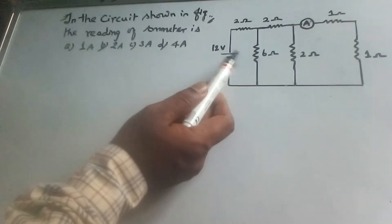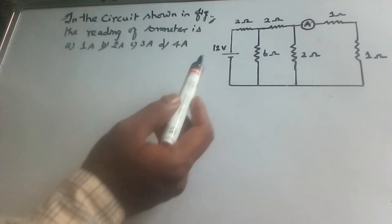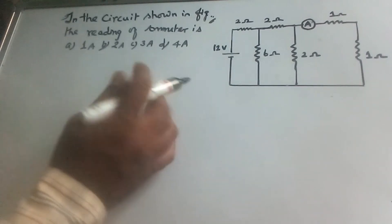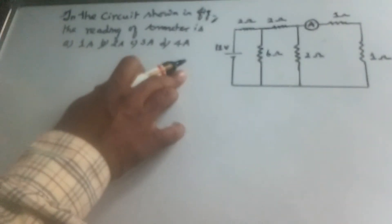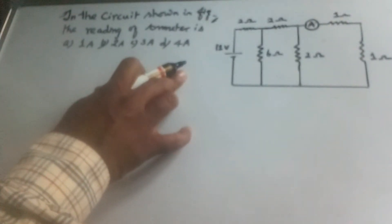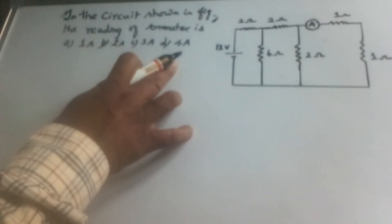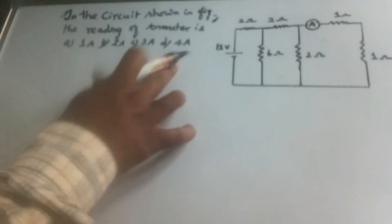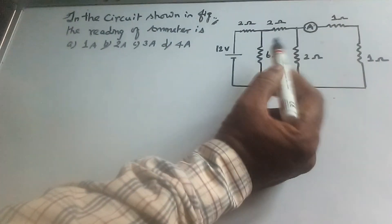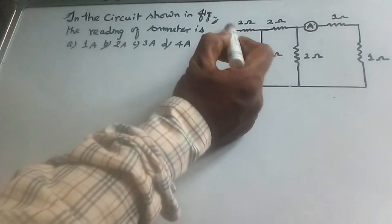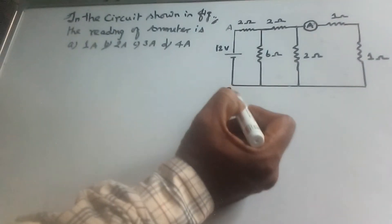In the circuit or figure, the reading of a meter is given. The options are 1 ampere, 2 ampere, 3 ampere, and 4 ampere. You will find the equivalent resistance between A and B.